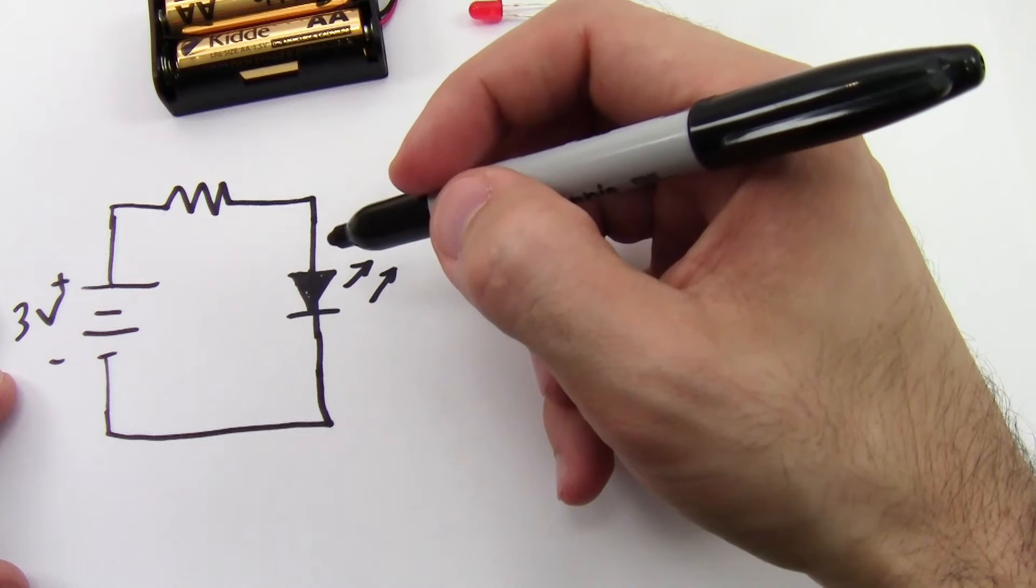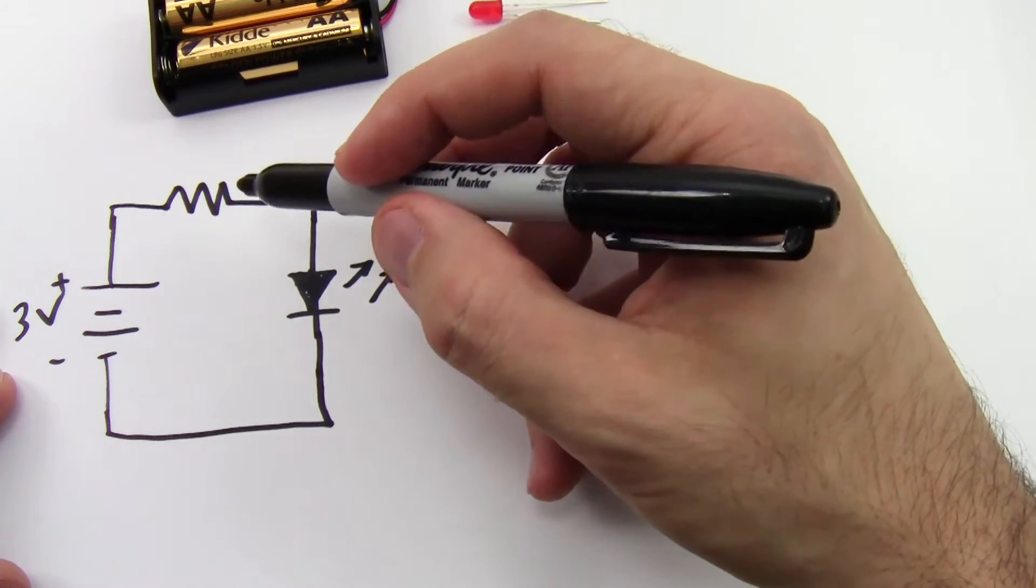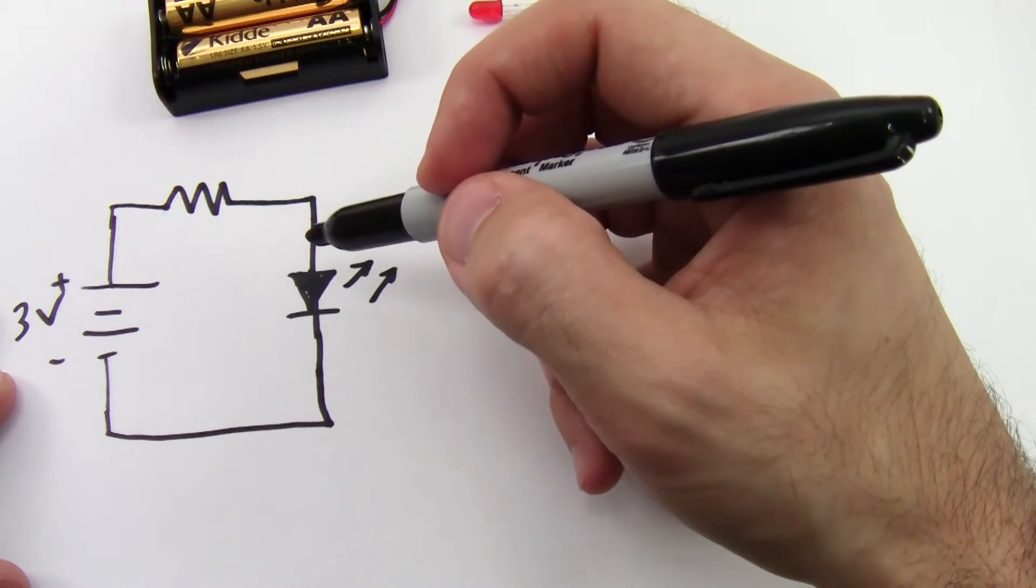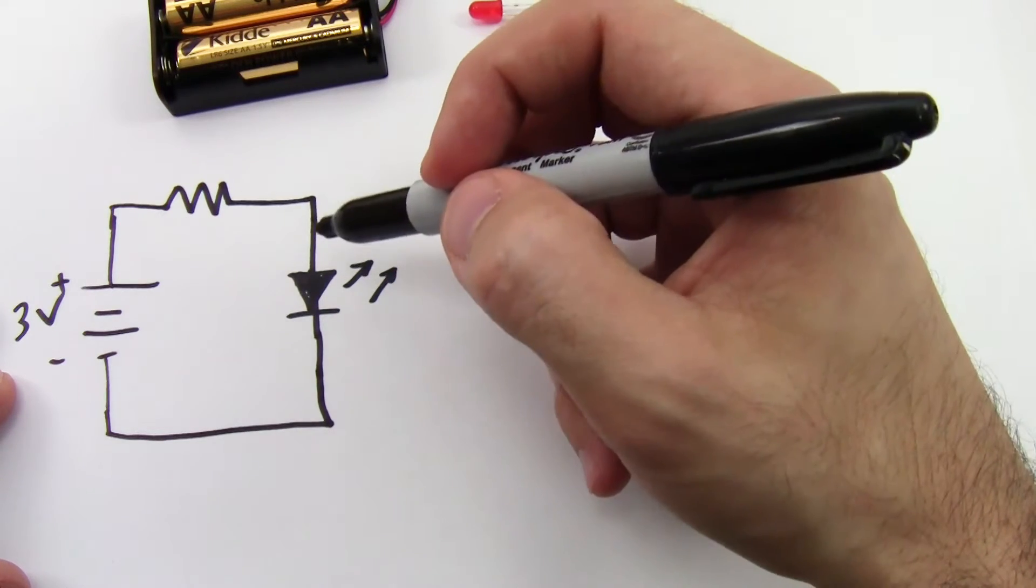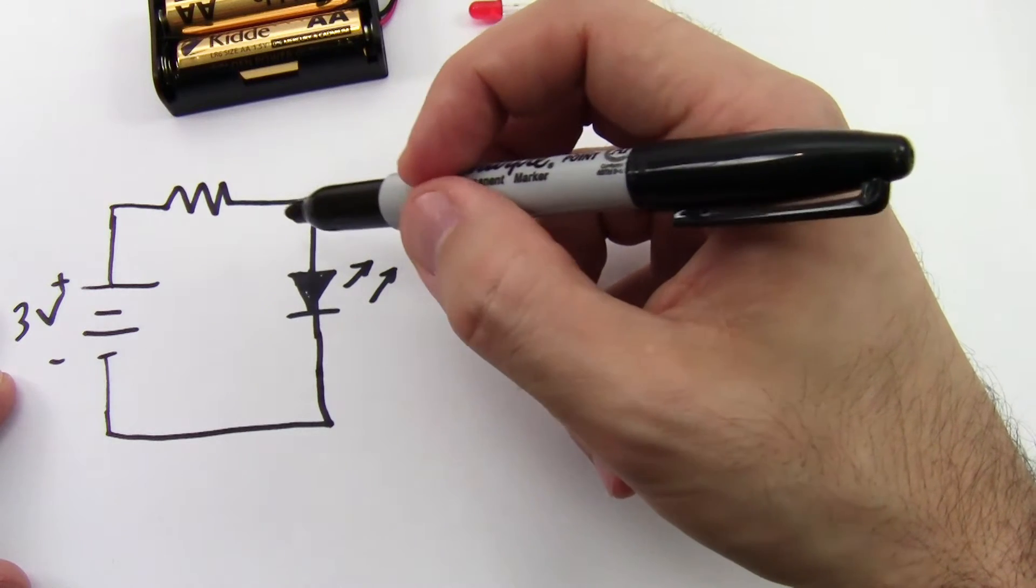This will limit the current flowing through the LED and get the voltage down to the appropriate level. Now it's a common misconception that this resistor needs to come before the LED to drop the voltage and limit the current to prevent the LED from burning out. That's actually not true. Since they are in series, you can reverse this and have the LED first.